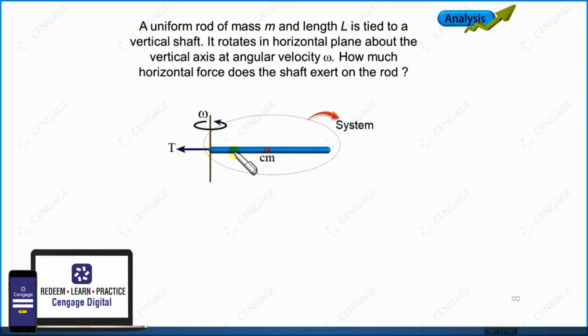The center of mass of the rod will be at a distance L by 2 from the center of rotation. So the centripetal acceleration at this position should be equal to omega square L by 2.